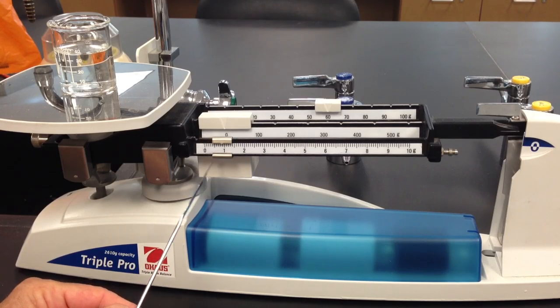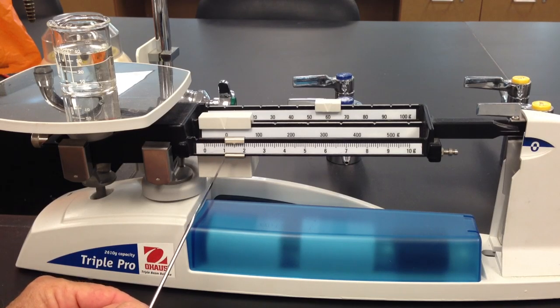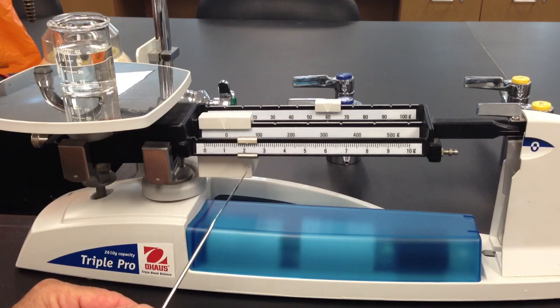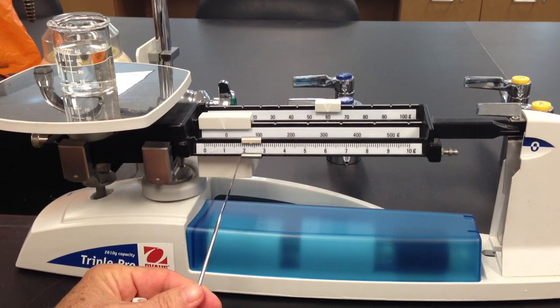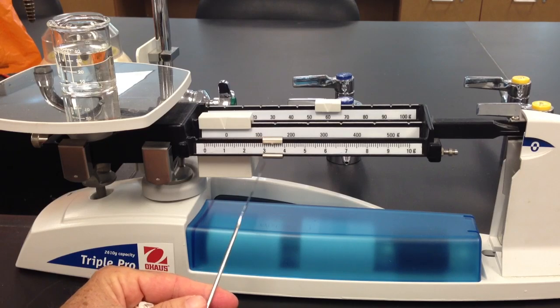You just freely slide this beam—this is where you're fine tuning your measurement—until you get the balance beam to balance to the zero mark at the end of the beam. We're going to continue sliding.